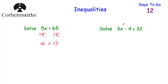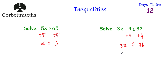Our next inequality: solve 3x minus 4 is less than or equal to 32. We don't want the subtract 4 or the multiply by 3, so first let's add 4 to both sides. 3x minus 4 plus 4 leaves us with 3x, and 32 plus 4 is 36, giving 3x less than or equal to 36. Now divide both sides by 3, leaving x is less than or equal to 12.